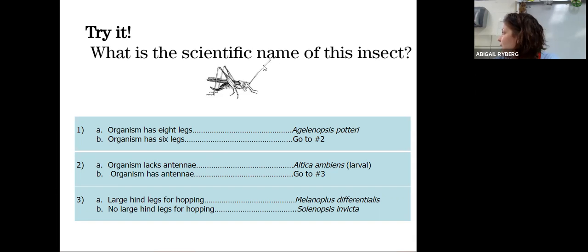We hop to question two: organism lacks antennae or organism has antennae. They have two large antennae, so I'm going to go to three. Large hind legs for hopping or no large hind legs for hopping. In this case, they've got huge nice big legs for hopping, so I'm going to say A and it then tells us the genus and the species. In your notes, you can write in this animal is, and practice writing the scientific name, and remember to underline it since you're writing it in your own little letters.